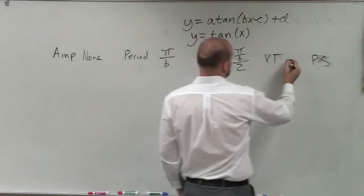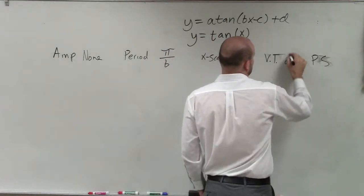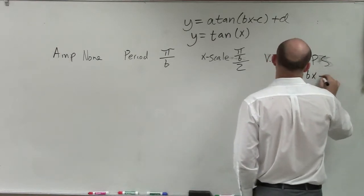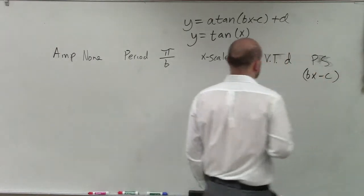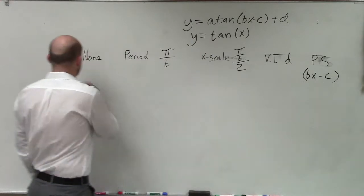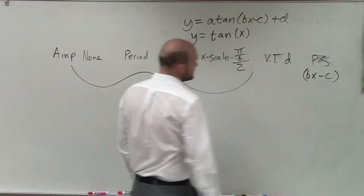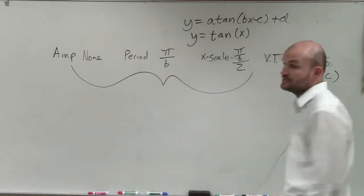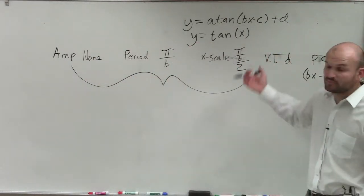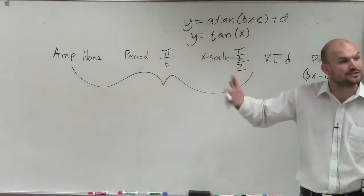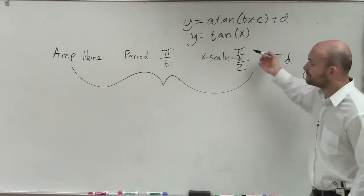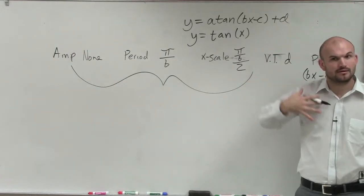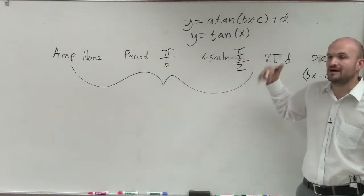Then vertical transformation, again, is just going to be your d. And your phase shift is going to be the exact same thing, bx minus c. So really, ladies and gentlemen, the only differences from tangent going from sine and cosine is just your amplitude is now nonexistent, your period instead of 2π divided by b is just π divided by b, and your x-scale instead of it being your period divided by 4, in my class we're going to do period divided by 2.